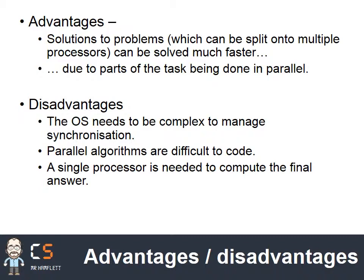Disadvantages: the operating system needs to be complex, because it needs to be able to manage all these different cores, do all the scheduling, and so on. Parallel algorithms are also difficult to code — in A2 you'll have a little bit of practice using threads, which is your first introduction to parallel processing, and you'll find very quickly it's not easy. Additionally, a single process is still needed to get the final answer — if I can't take advantage of parallelism by splitting the problem up and I still have a serial process at the end, I'm not going to get any advantage.